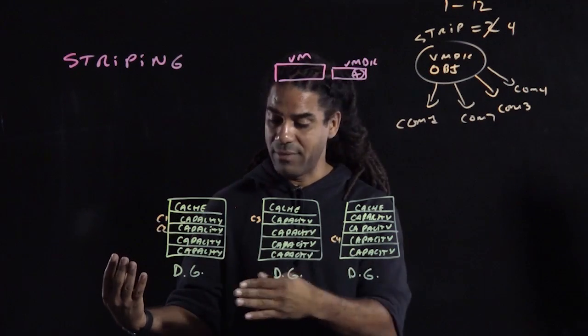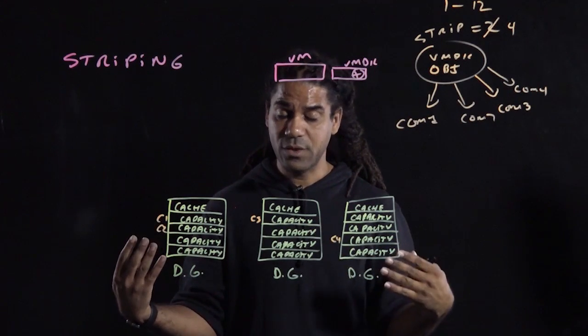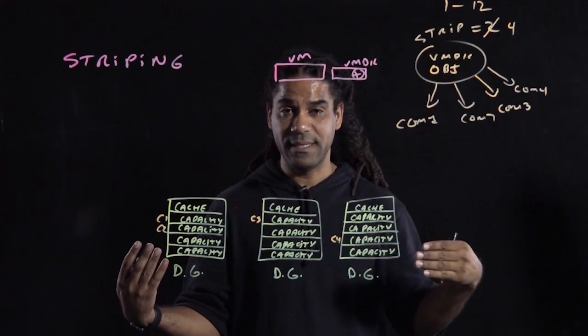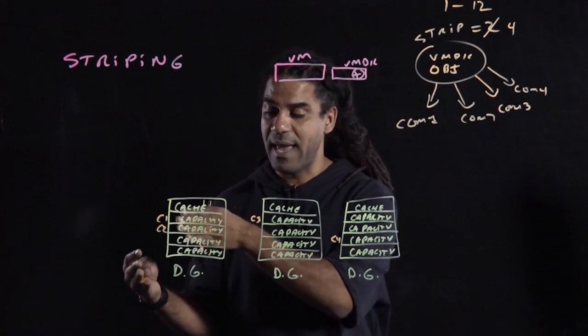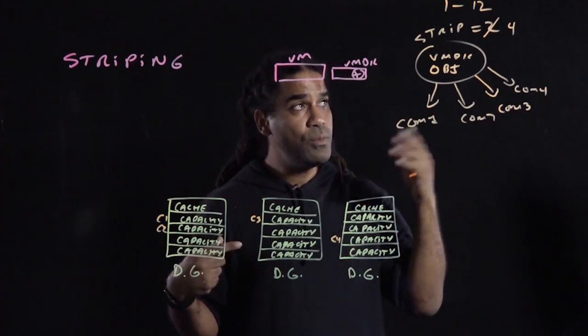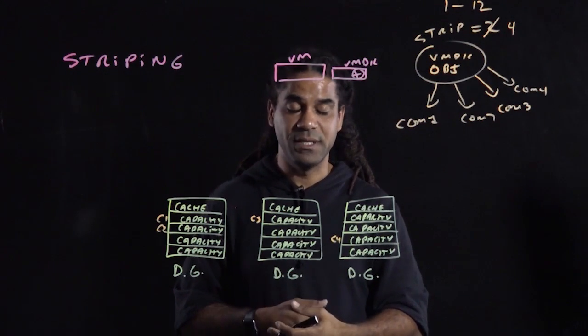So in this particular design, we have three disk groups, each one with four capacity disks. We could do a stripe of 12, and every capacity disk here will be used to stripe that VMDK or that object.